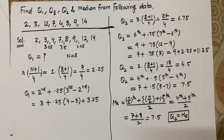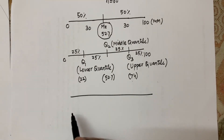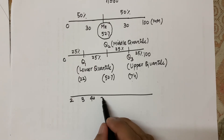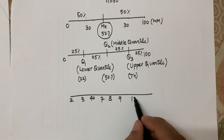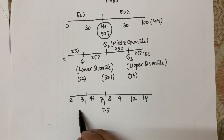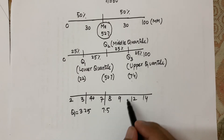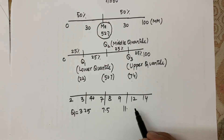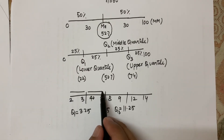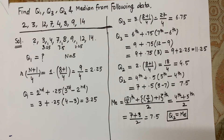Now if we place the data on a number line with values 2, 3, 4, 7, 8, 9, 12, and 14, the median Q2 is at 7.5, Q1 is at 3.25, and Q3 is at 11.25. You can see four equal distributions of 25% each, which matches our earlier diagram of how quartiles divide data into four equal parts. Thank you very much.